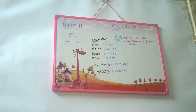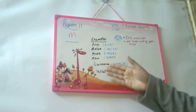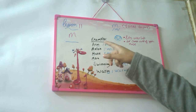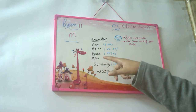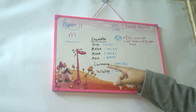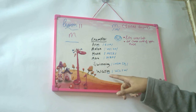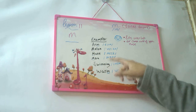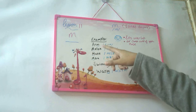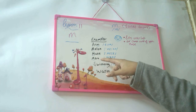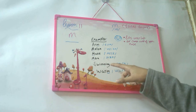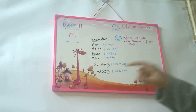So let's pronounce these words. We have: arm, melon, make, man, swimming, and warm. Arm, melon, make, man, swimming, and warm.